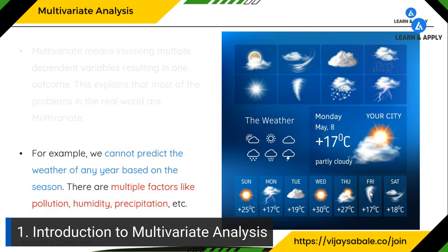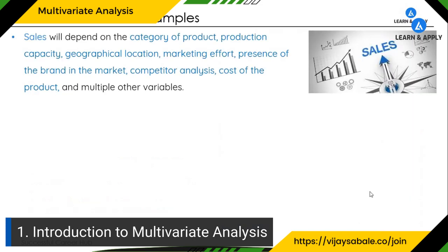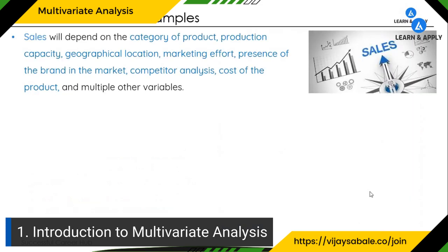For a more practical scenario, let's look at sales. The sale of any product or service depends on many factors: the category of the product, production capacity of the organization, geographical location, marketing effort, brand presence in the market, competitor analysis, and cost of the product, among many others. So if you want to study sales, again it's multivariate and we need to use multivariate analysis.